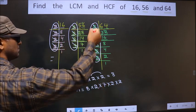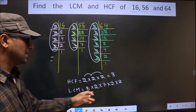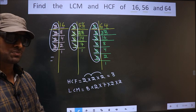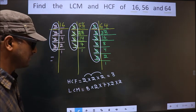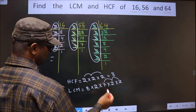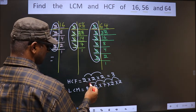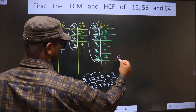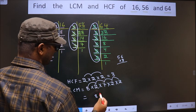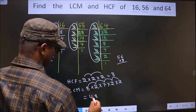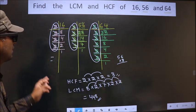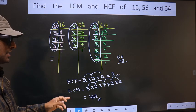Now each number has been cut. So multiply these numbers to get the LCM: 2 × 2 is 4, 4 × 7 is 28, 28 × 2 is 56, 56 × 8 is 448. So our LCM is 448 and our HCF is 8.